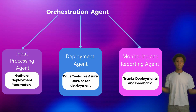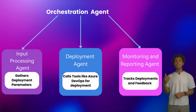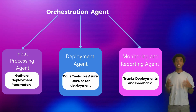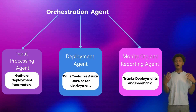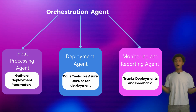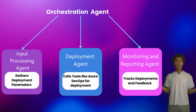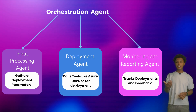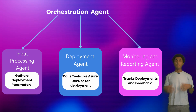Here's the approach. First, we can define multiple agents: an input processing agent to gather deployment parameters, a deployment agent to call tools like Azure DevOps pipelines and Ansible for deployment, and a monitoring and reporting agent to track deployments and provide feedback. On top of all of that, we will have an orchestration agent coordinating the whole show by sharing and delegating tasks between the agents.